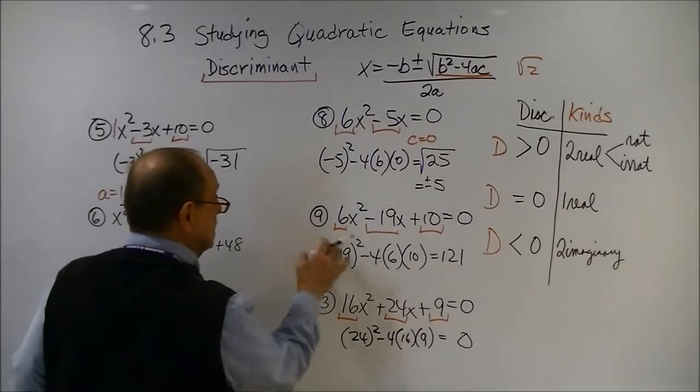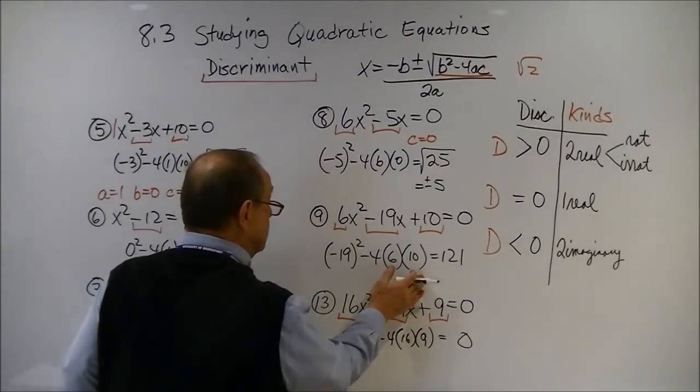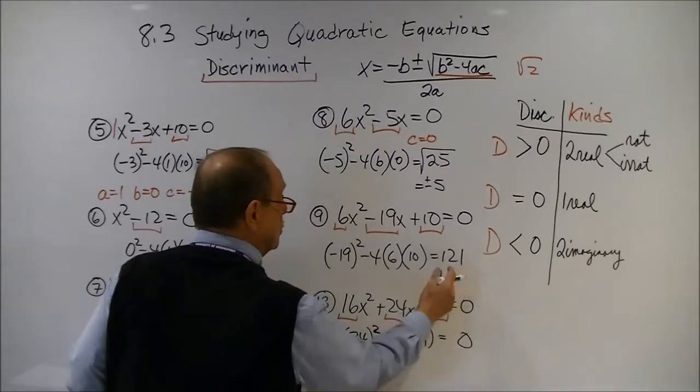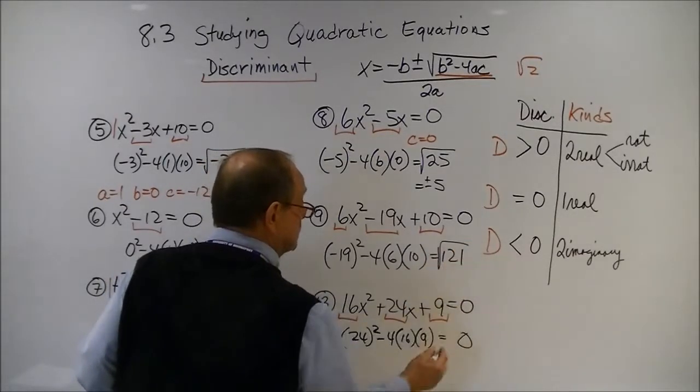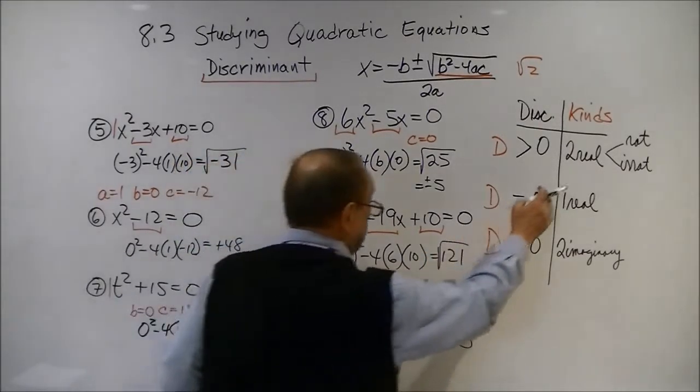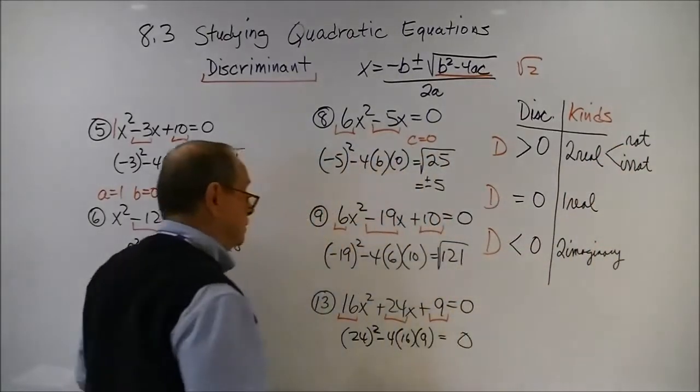For number 9, again, here's my discriminant. It comes out of positive, 121, which is a perfect square. So I'm going to get two real solutions that are rational.